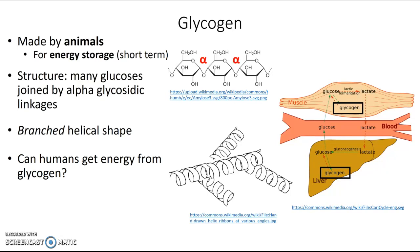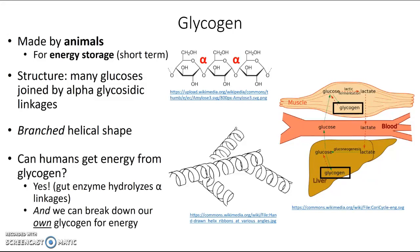Can humans obtain energy from breaking down glycogen? Yes — because we have enzymes that can hydrolyze those alpha glycosidic linkages. So when you eat the muscle or liver of another creature — like steak or liver — you can break apart the glycogen, release the glucose, and get energy. But you can also break down the glycogen in your own muscles and liver without eating them, and get energy from there too.